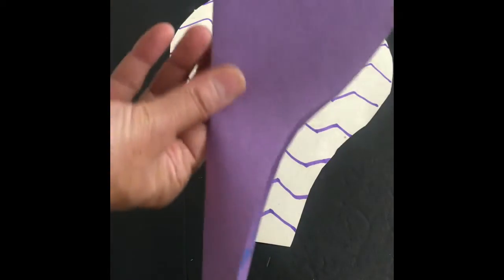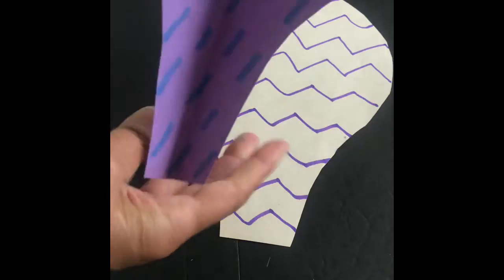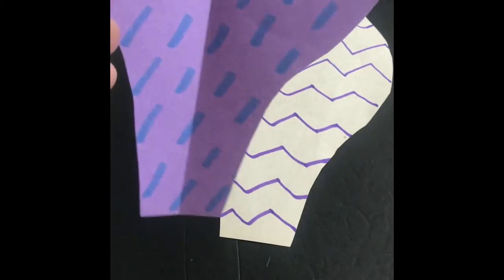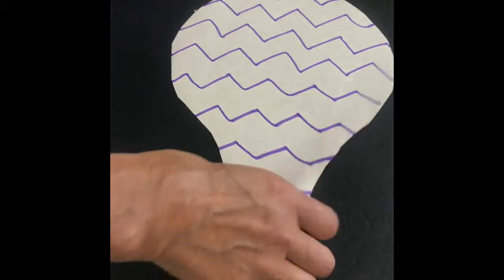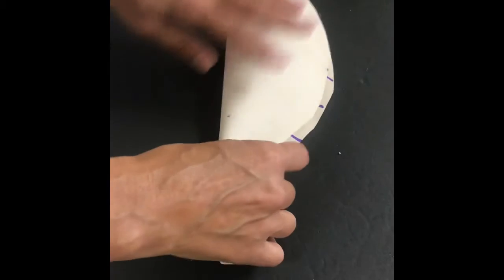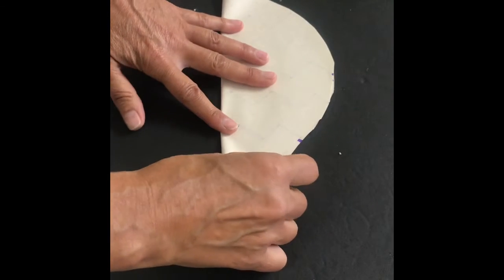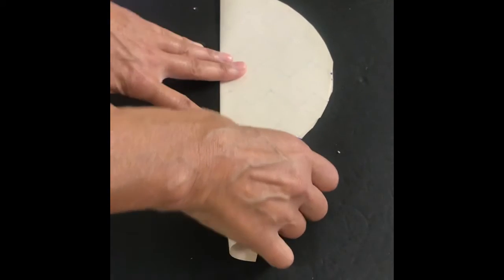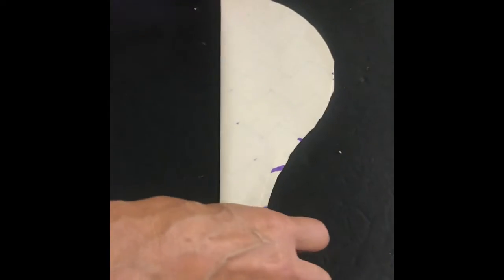The next step is to fold each cutout in half with the line design side up. Be sure to align the sides as closely as possible.